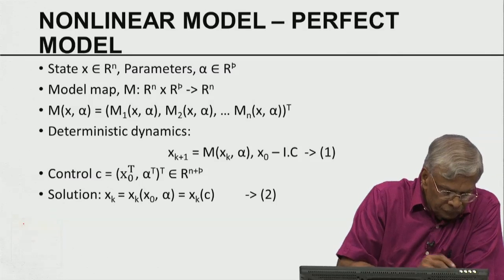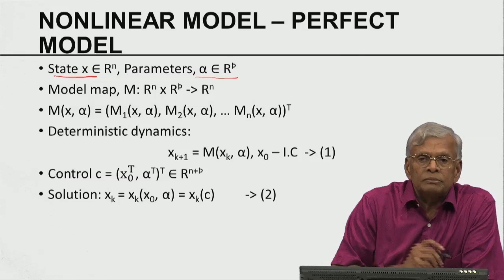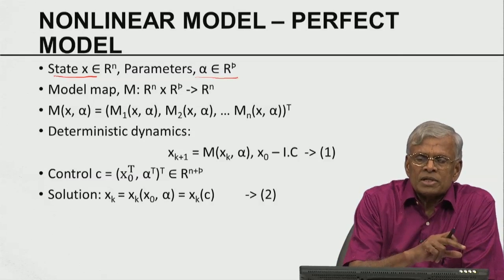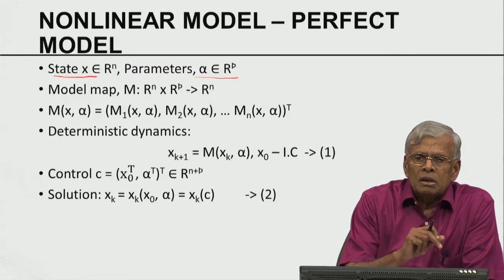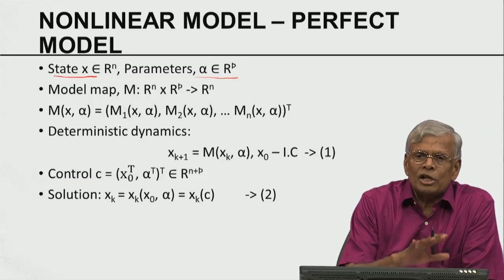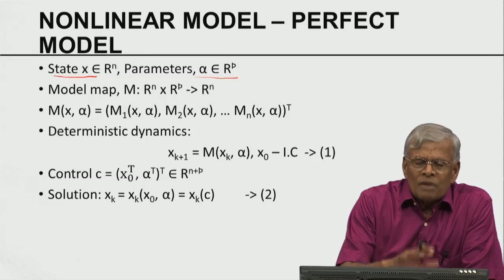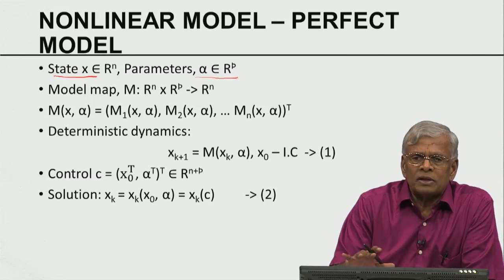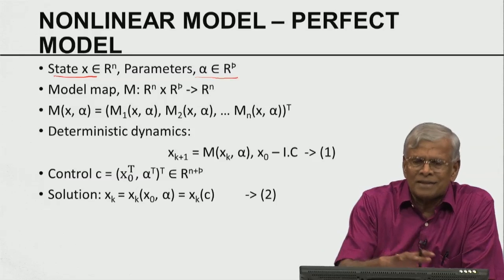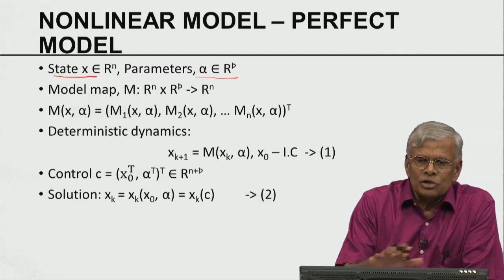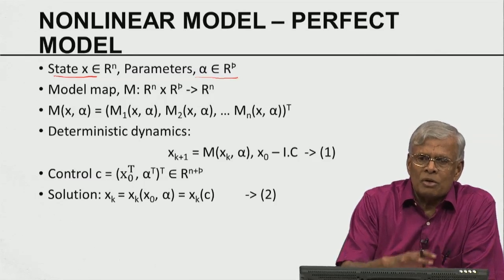Let x be a state and alpha be a parameter. One difference between this lecture and the previous lecture is that previously we assumed the parameters define the model and because the model is perfect there is no error in parameters — the only forecast error was due to errors in the initial condition. Here we consider a slight generalization: even though the model is perfect, we may not have set the parameter values correctly, so there could be errors in the initial condition, boundary condition, and our parameters.